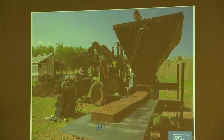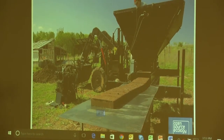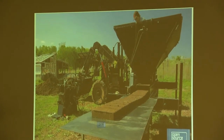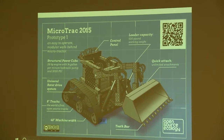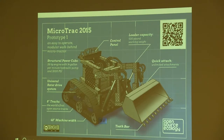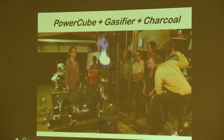Here you can see a brick press making compressed-earth bricks, with a power cube, and a tractor in the back. And this is a walk-behind micro-tractor, again with a power cube. Many of these machines have been built and replicated in many versions around the world. Here's one being assembled with a power cube being lifted, and here's the power cube running on charcoal with a gasifier.